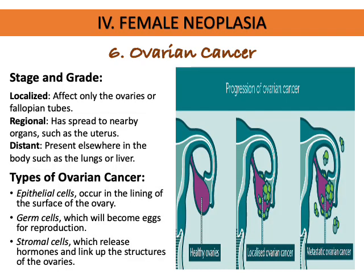Staging of ovarian cancer includes localized (affects only the ovaries or fallopian tubes), regional (spread to nearby organs like the uterus), and distant (present elsewhere such as the lungs or liver). Types include epithelial cancer (occurs in the lining of the ovary's surface), germ cell tumors (from cells that become egg cells), and stromal cell tumors (from cells that release hormones and link structures of the ovaries).